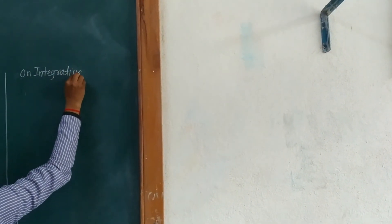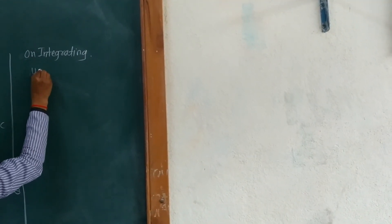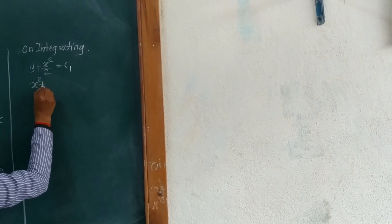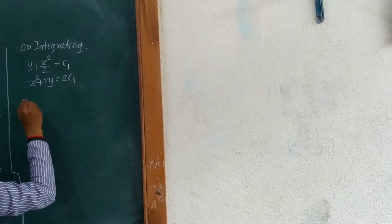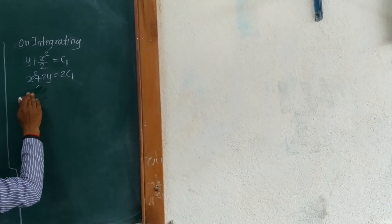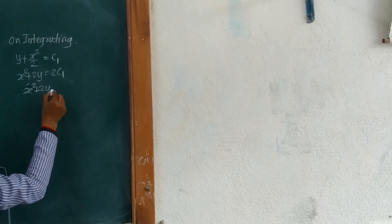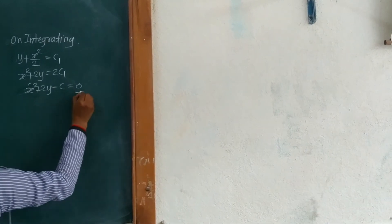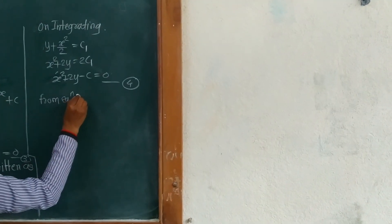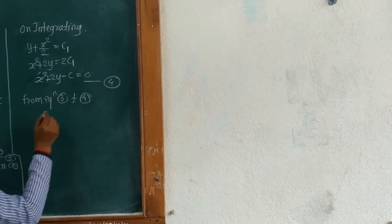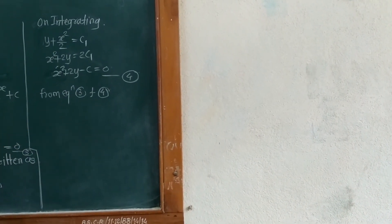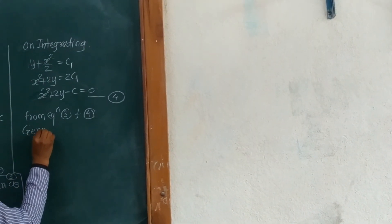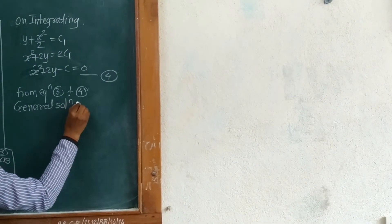Therefore y plus x squared over 2 equals c1 is the solution. We can further simplify to get x squared plus 2y equals 2c1. Writing 2c1 as c, we get x squared plus 2y minus c equals 0. We number this as equation 4. From equations 3 and 4, the general solution of the given differential equation is: (x plus y plus 1 minus c times e raised to x) times (x squared plus 2y minus c) equals 0.